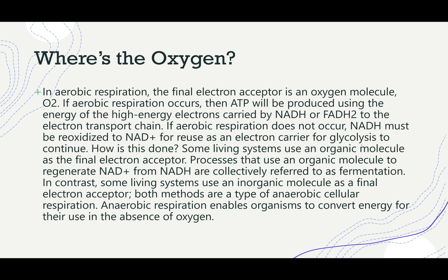What cyanide will do is bind to complex 4 in the electron transport chain and stop the addition of electrons to oxygen. It will stop the function of complex 4, and then we have the release of all sorts of different radicals. Electrons will continue to destroy different types of cellular machinery, destroy DNA and stuff like that, damaging cells permanently and leading to death.